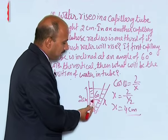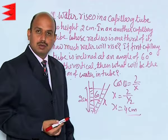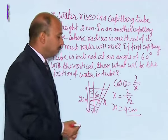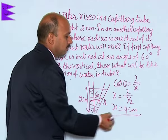If the capillary tube is inclined at an angle of 60 degrees from the vertical, then the position of the water will be at 4 centimeters.